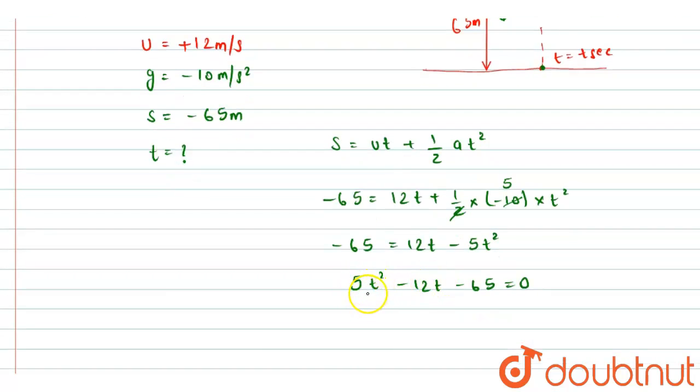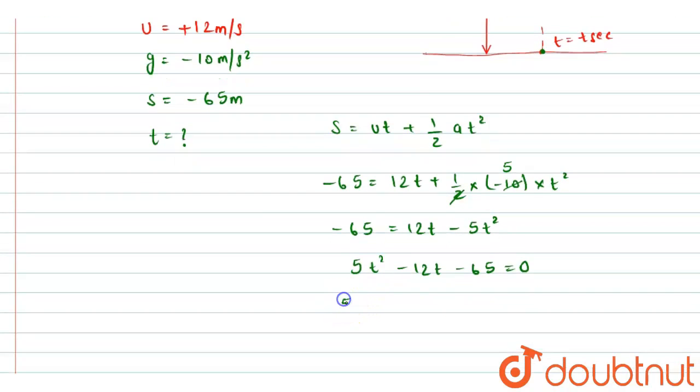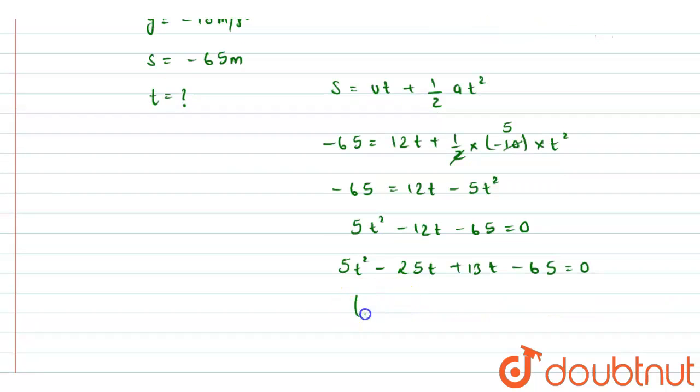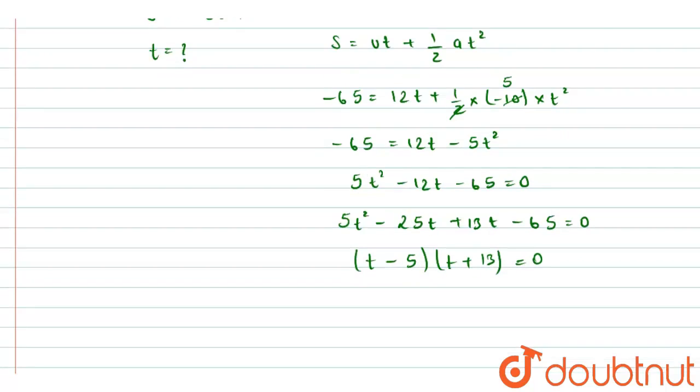So we can solve this by using the factorization method. The factors would be 5t square minus 25t plus 13t minus 65 equals to 0. So from here we can make the factors as t minus 5 and t plus 13.